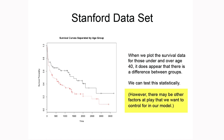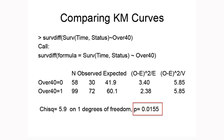However, the log rank test does not allow us to adjust for confounders. This tests the difference in survival between the two age groups ignoring other factors, and there may be other factors at play that we aren't controlling for here. Since the p-value of the log rank test is less than 0.05, we reject the null hypothesis and have evidence to believe that the survival functions are different for the two age groups ignoring other factors. Those over 40 appear to have shorter survival time compared to those under 40, ignoring other factors.